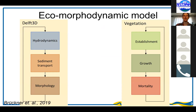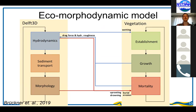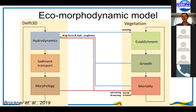These two models are coupled so they interact on a bi-weekly basis. The hydrodynamics computed in Delft3D determine where vegetation can establish and whether vegetation can survive — if flow velocities or inundation periods become too high, it will kill off the vegetation. On the other hand, vegetation growth and mortality will change the drag force and hydraulic roughness on the hydromorphodynamics, creating a feedback loop between the hydromorphodynamic computations and the dynamic vegetation model.